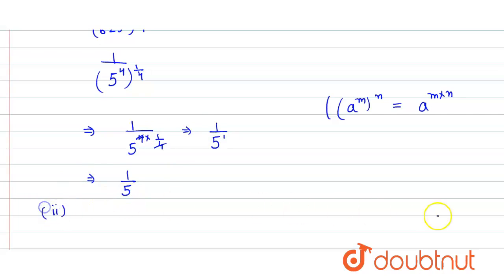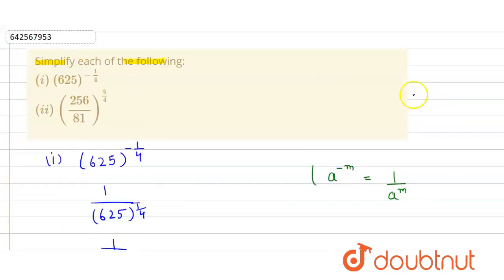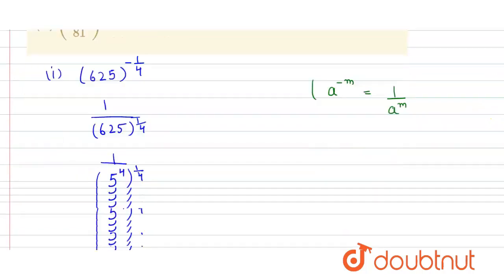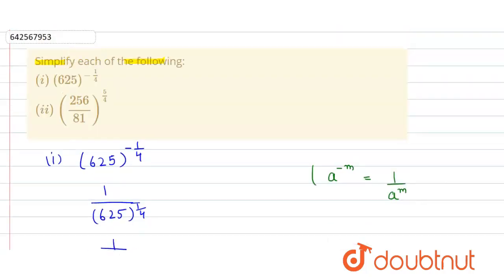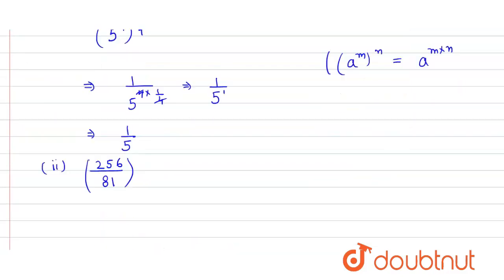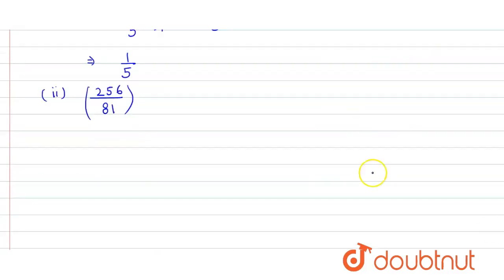Similarly, in the second part, the expression we have to solve is 256 divided by 81, raised to power 5 divided by 4.